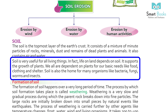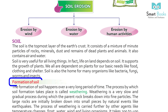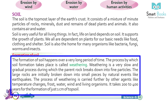Soil supports the growth of plants. We all are dependent on plants for our basic needs like food, clothing, and shelter. Soil is also the home for many organisms like bacteria, fungi, worms, and insects.